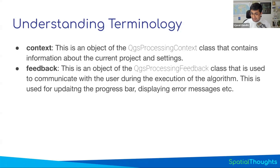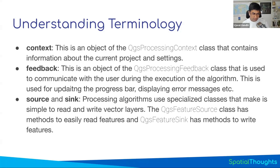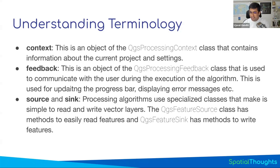Feedback is an object that displays the progress bar and any messages. When running your code, you keep updating this feedback object - feedback.setProgress(10%), setProgress(20%) - and that updates the progress bar. So feedback is the object the processing API uses to display the progress bar and error messages. The processing tool classes also use terminology called source and sink. Most tools, if using vector layers, read data from a vector layer, do some processing, and write features. The processing API provides specialized classes called QgsFeatureSource and QgsFeatureSink, which allow you to read and write features easily.